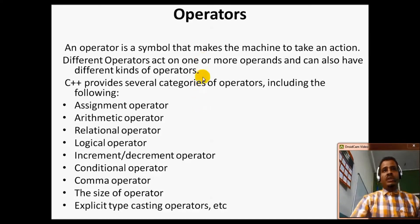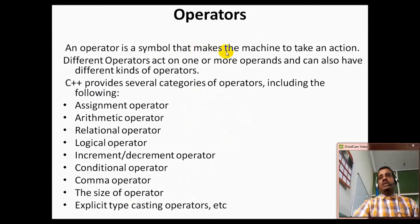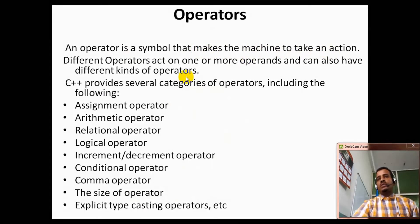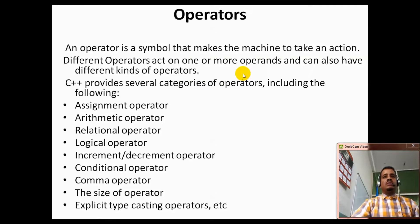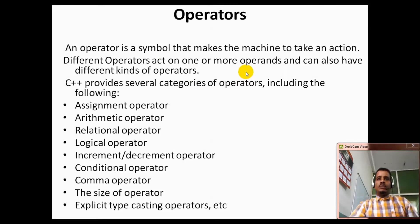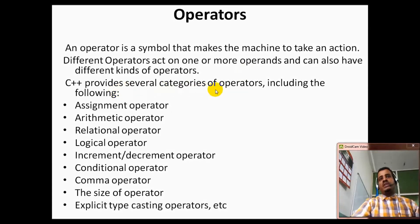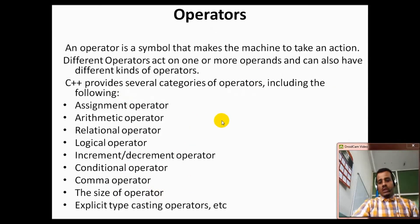The first one: an operator is a symbol that makes a machine take an action. A class is a symbol. When we are using an action, action is a symbol, class is a symbol, and there is a symbol. A calculator is a symbol. C++ provides several categories of operators.